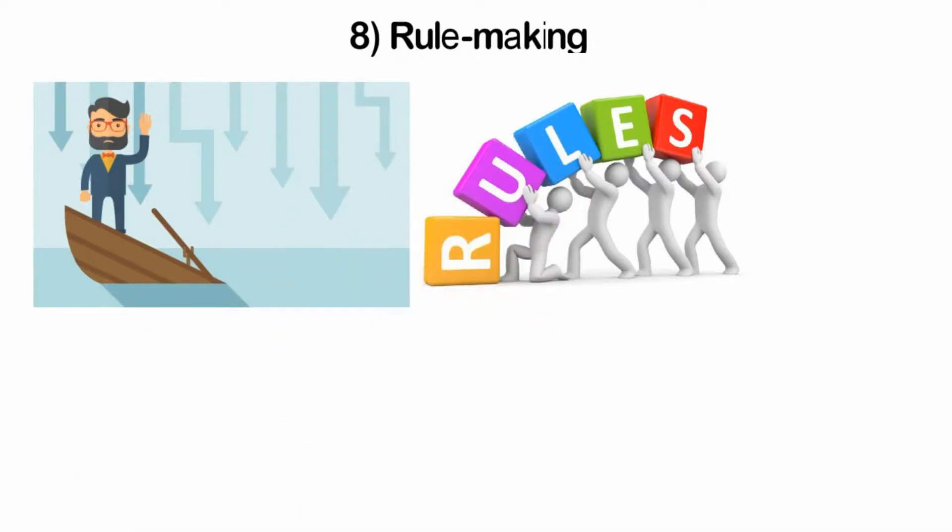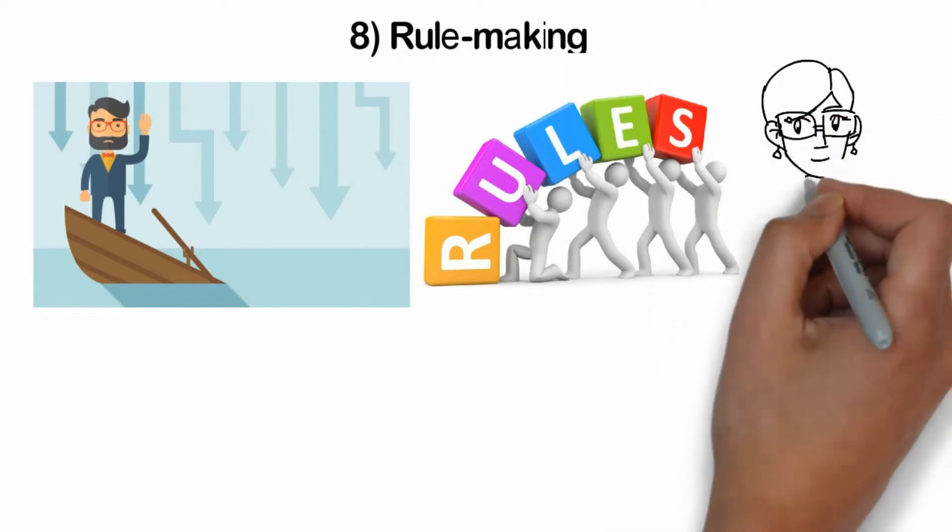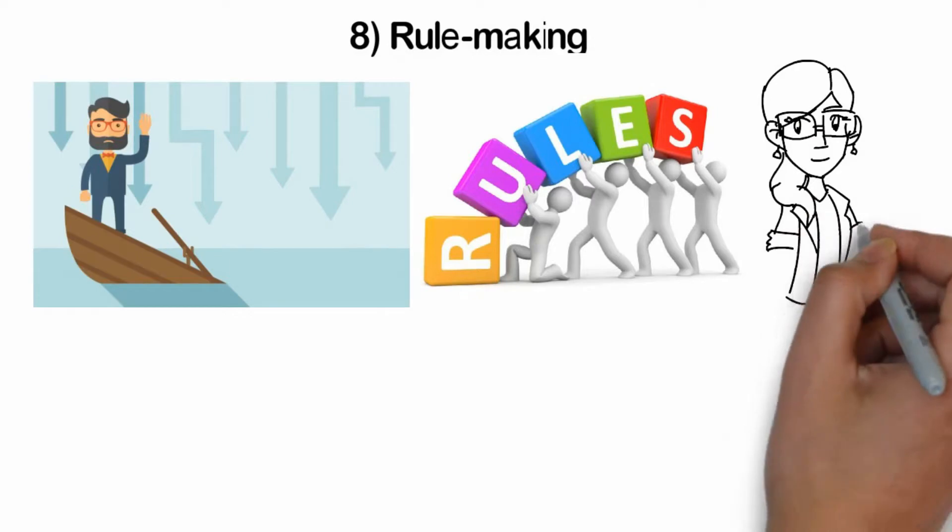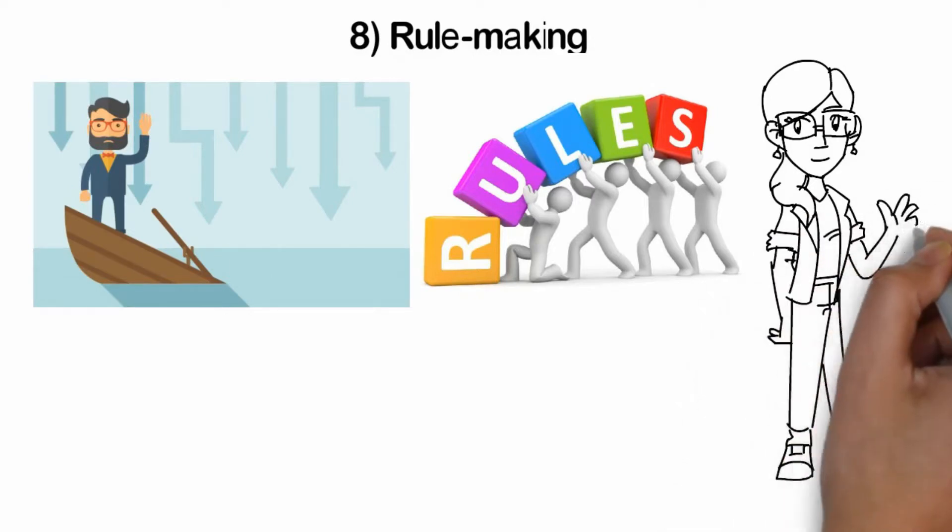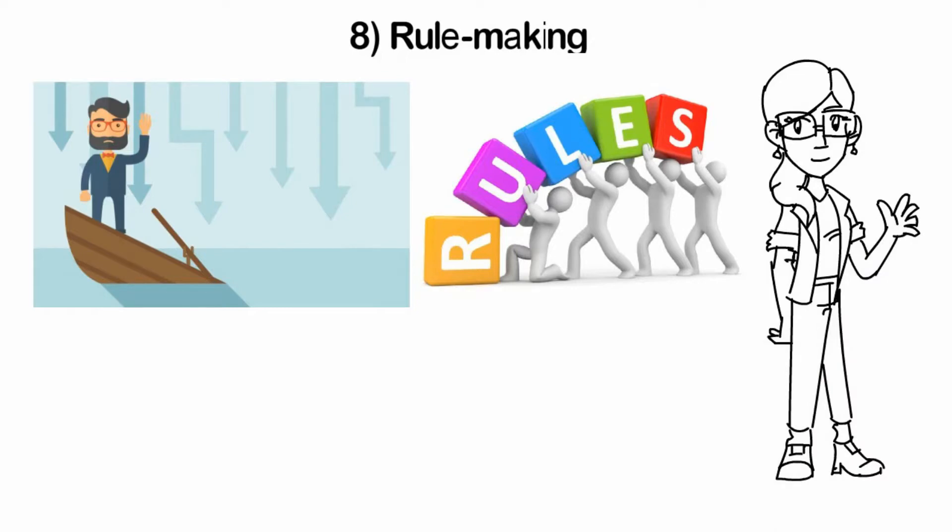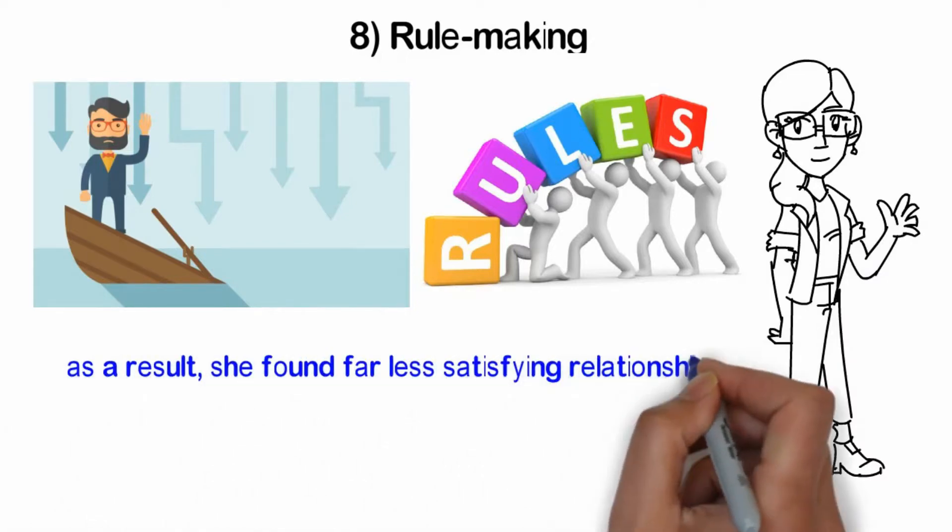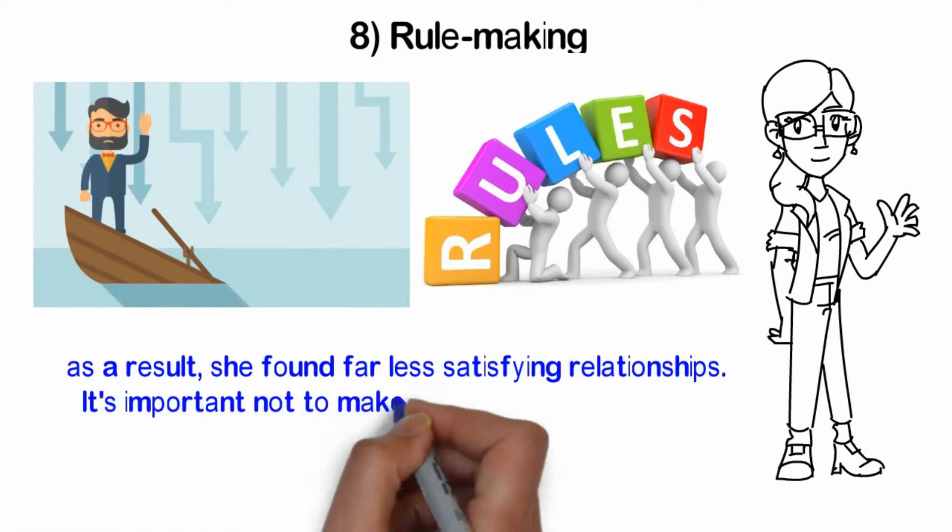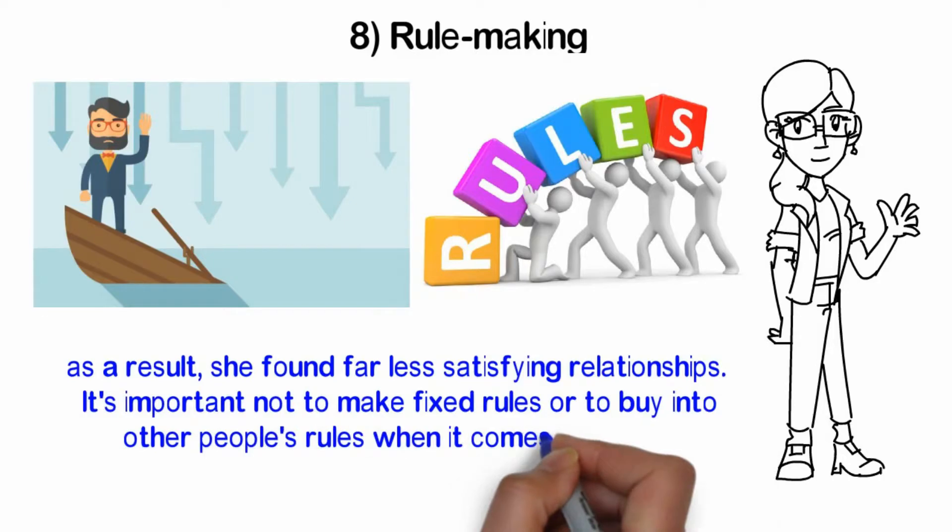A woman I know once dated someone with whom she had amazing chemistry. When it didn't work out, she decided to stop looking for a guy she felt a strong connection with or attraction to. Instead, she made reasonable choices. You know, reasonable. And as a result, she found far less satisfying relationships. It's important not to make fixed rules or to buy into other people's rules when it comes to dating.